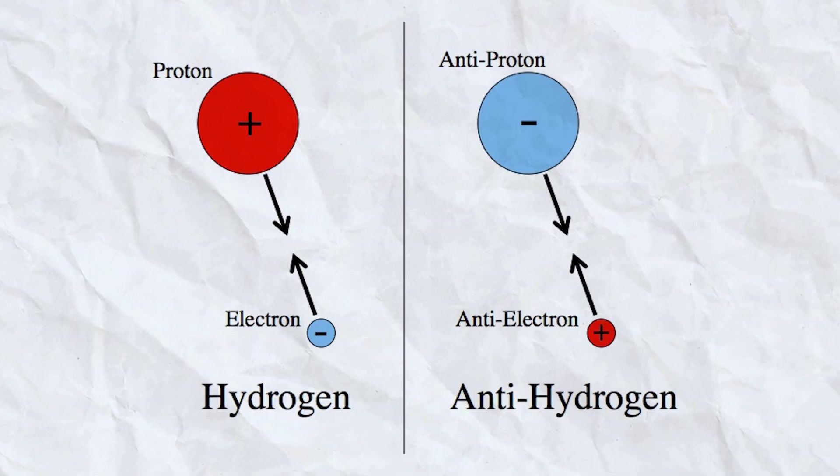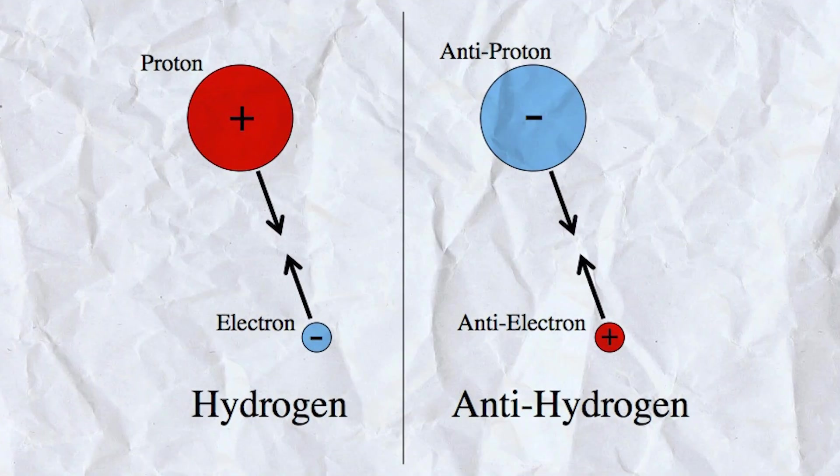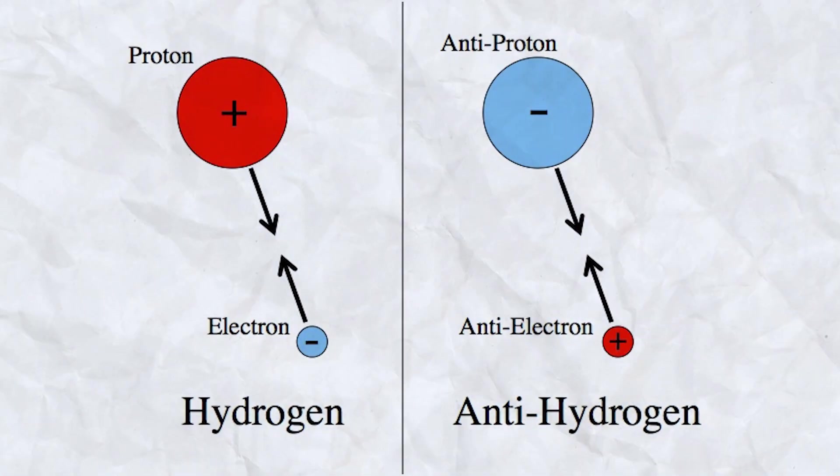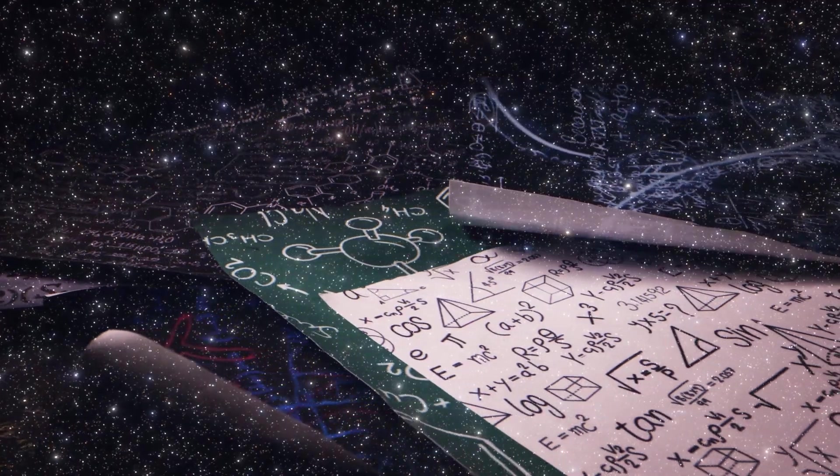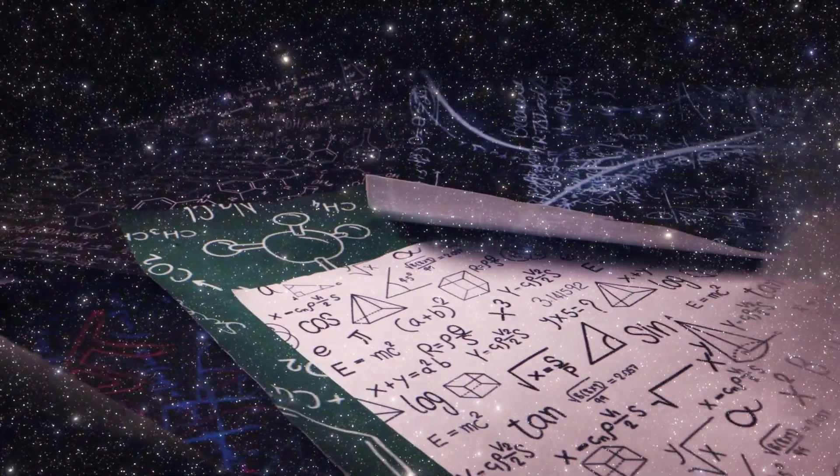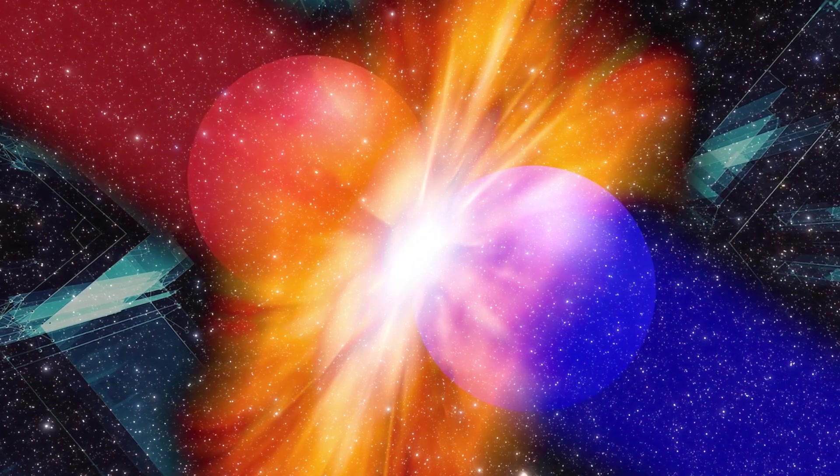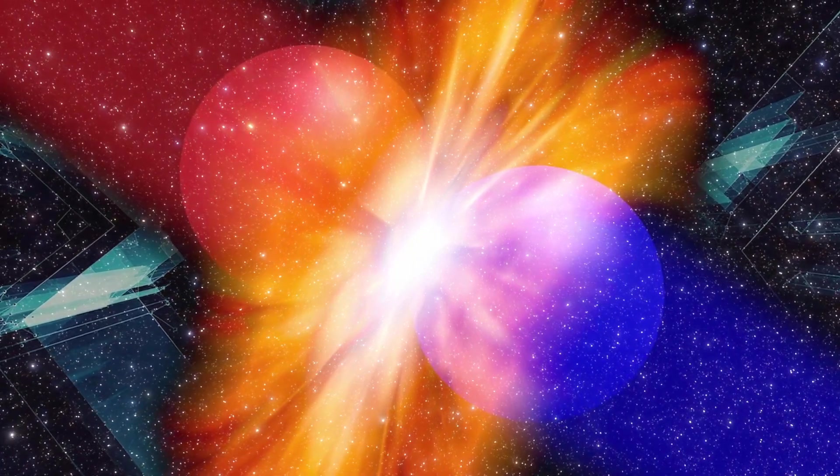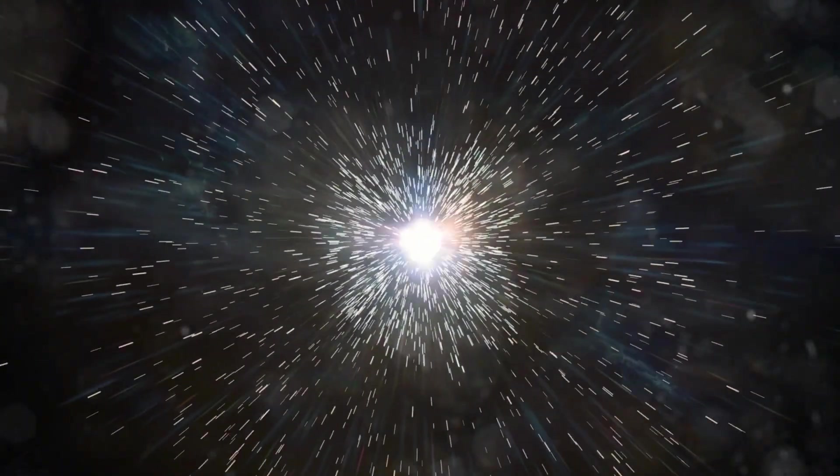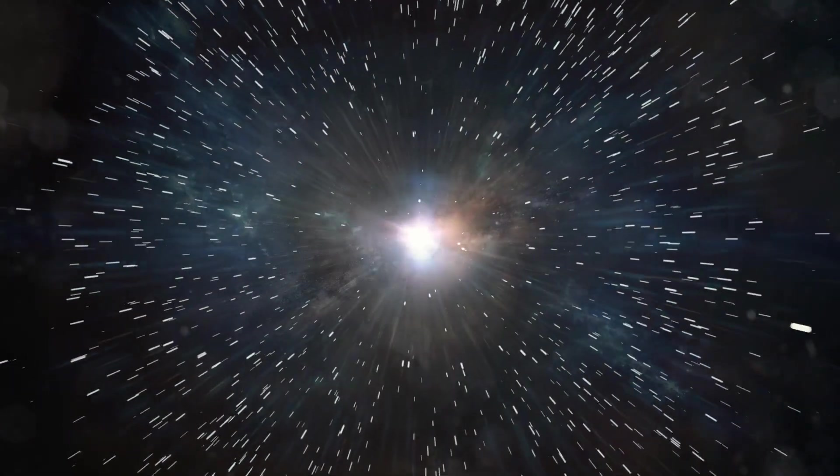Antimatter is essentially the opposite, with particles that have the same mass but opposite charge to their matter counterparts. According to our current understanding of physics, when matter and antimatter come into contact, they annihilate each other. So if the universe had equal amounts of matter and antimatter when it began, they should have annihilated each other, leaving nothing behind.